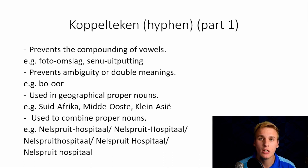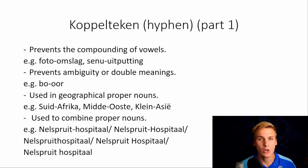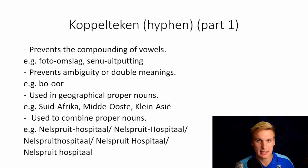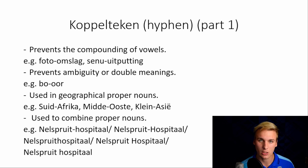The koppelteken, or the hyphen, Part 1. It prevents the compounding of vowels. For example: boer-omslag — the photo cover — and senuwee-uitputting — depletion of your nerves, or being at wit's end. It prevents ambiguity or double meanings. For example: boer-oor rather than boerooor — boer with two o's, not three — is a drill. It is used in geographical proper nouns. For example: Suid-Afrika, Die Midde-Weste, Die Midde-Ooste, and Klein-Asië.